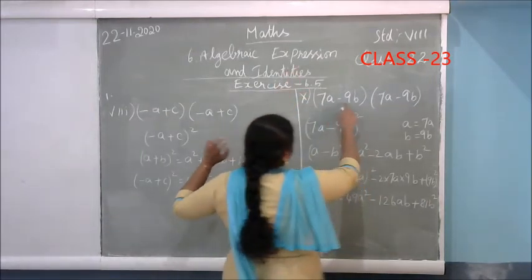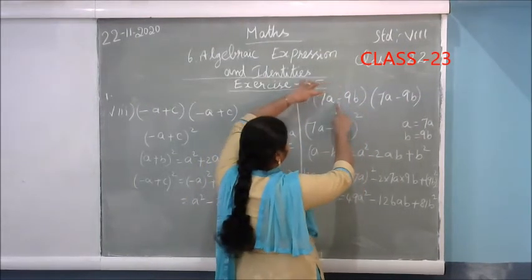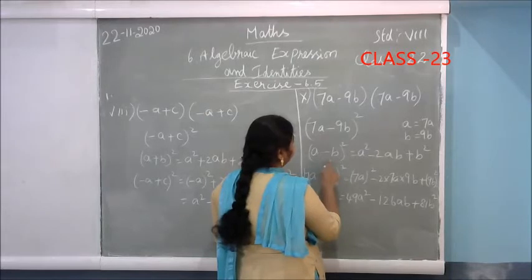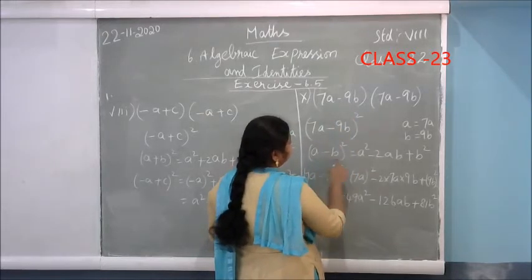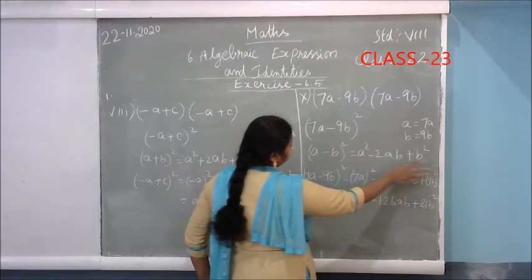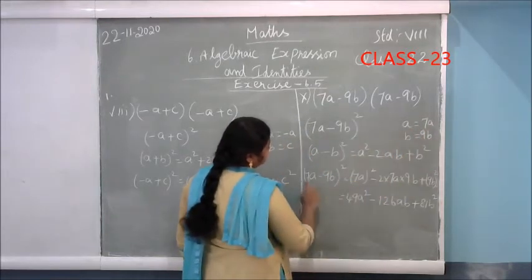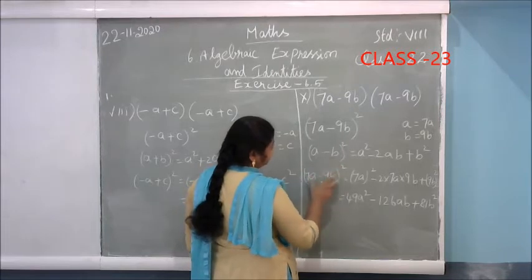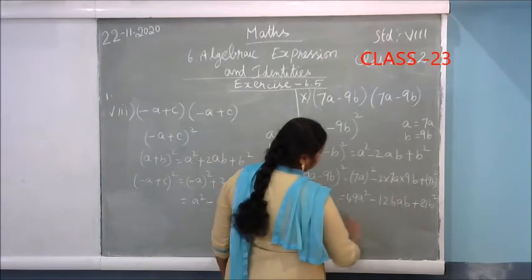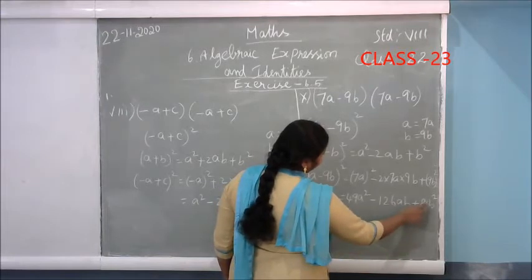Sign is different, so use the second formula: (A-B)² = A²-2AB+B². Here instead of A put 7A, instead of B put 9B. Simplifying (7A-9B)²: (7A)² - 2×7A×9B + (9B)² = 49A² - 126AB + 81B². That is your answer.